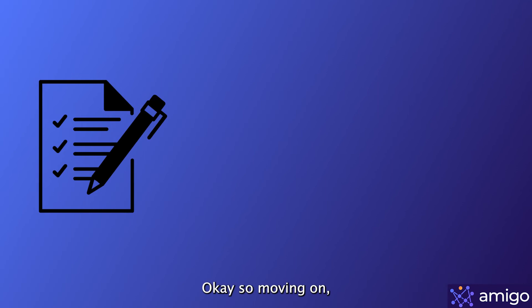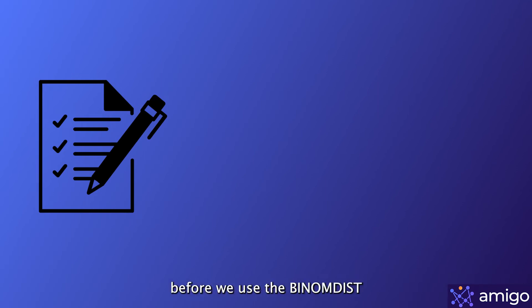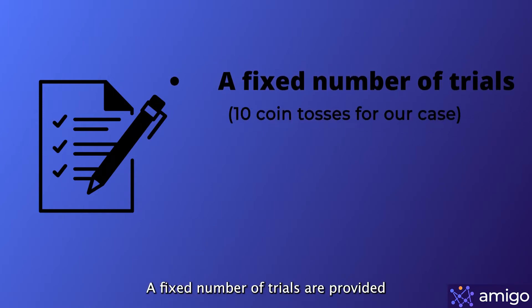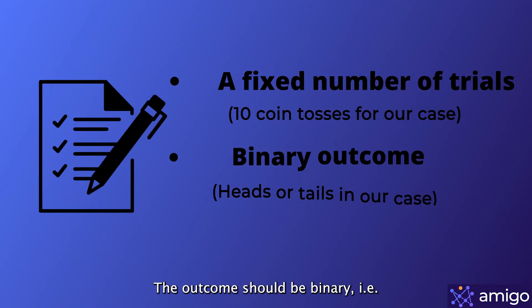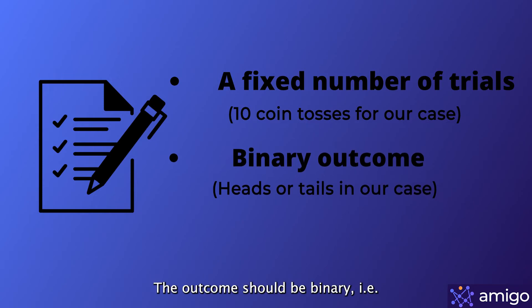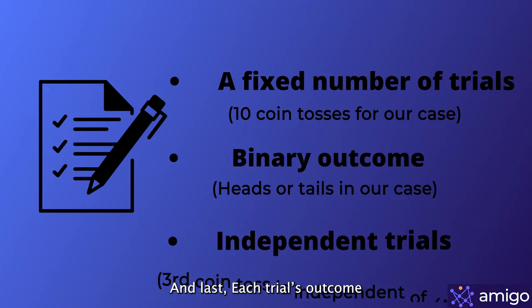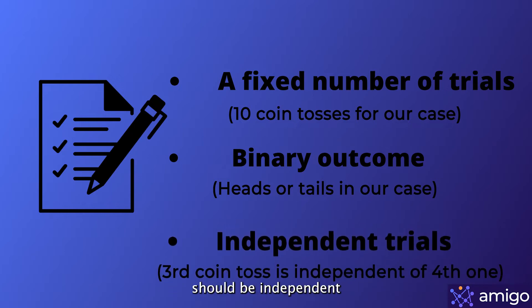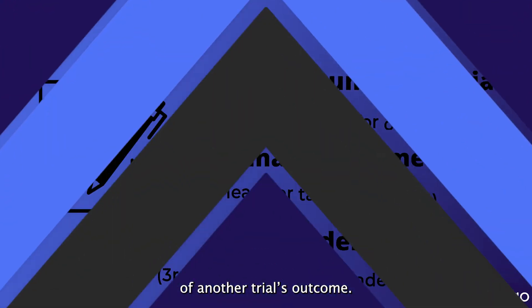Moving on, we have to keep a few things in check before we use the BINOMDIST function. First, a fixed number of trials are provided. Second, the outcome should be binary — that is, only two outcomes are possible. And last, each trial's outcome should be independent of another trial's outcome.